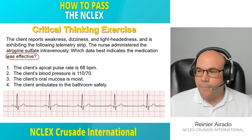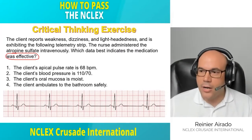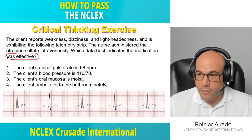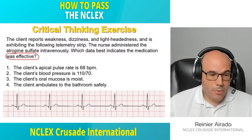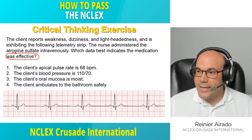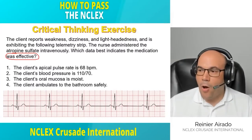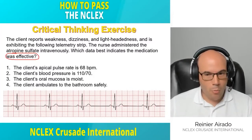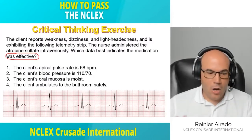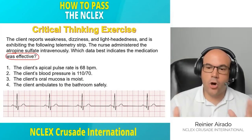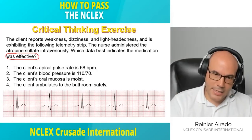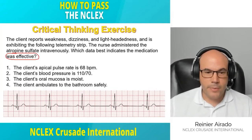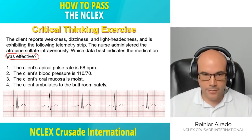If the patient has sinus bradycardia, how do I know it got better? Look at answer number one: the client's apical pulse rate is 68 — no more bradycardia. It went back to the normal range of 60 to 100, so answer number one tells me the patient is better.